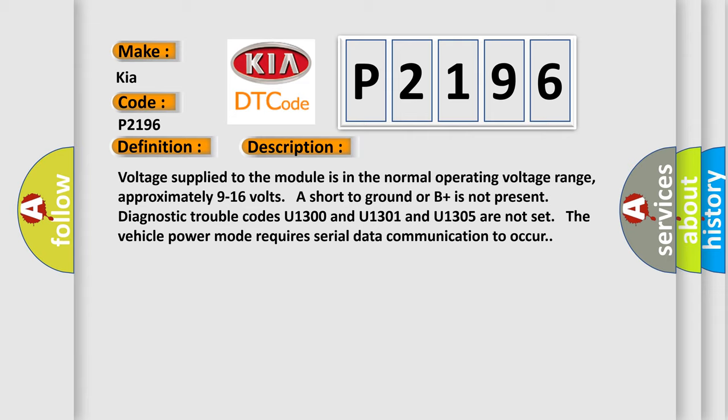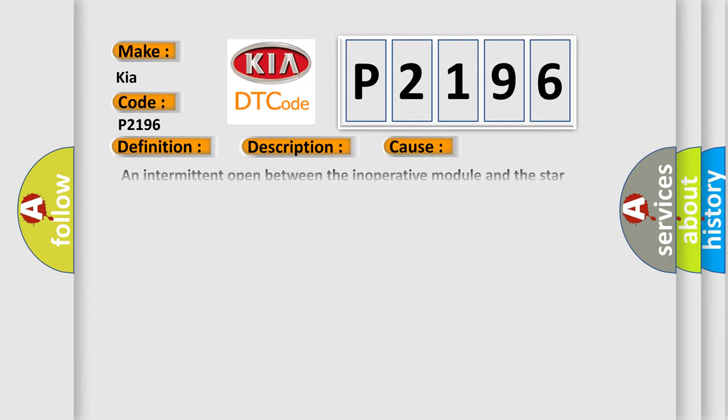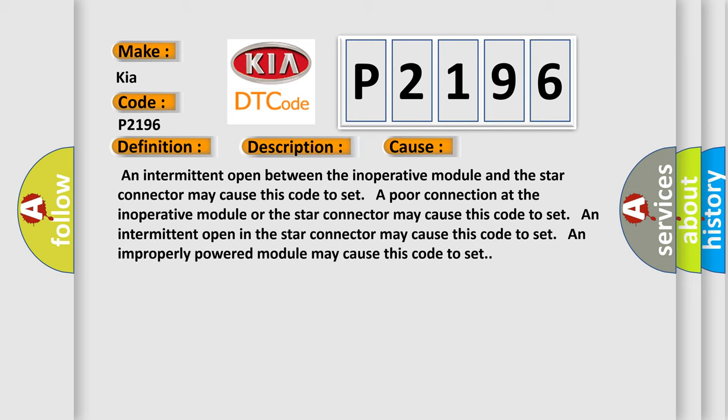This diagnostic error occurs most often in these cases: An intermittent open between the inoperative module and the star connector may cause this code to set. A poor connection at the inoperative module or the star connector may cause this code to set. An intermittent open in the star connector may cause this code to set. An improperly powered module may cause this code to set.